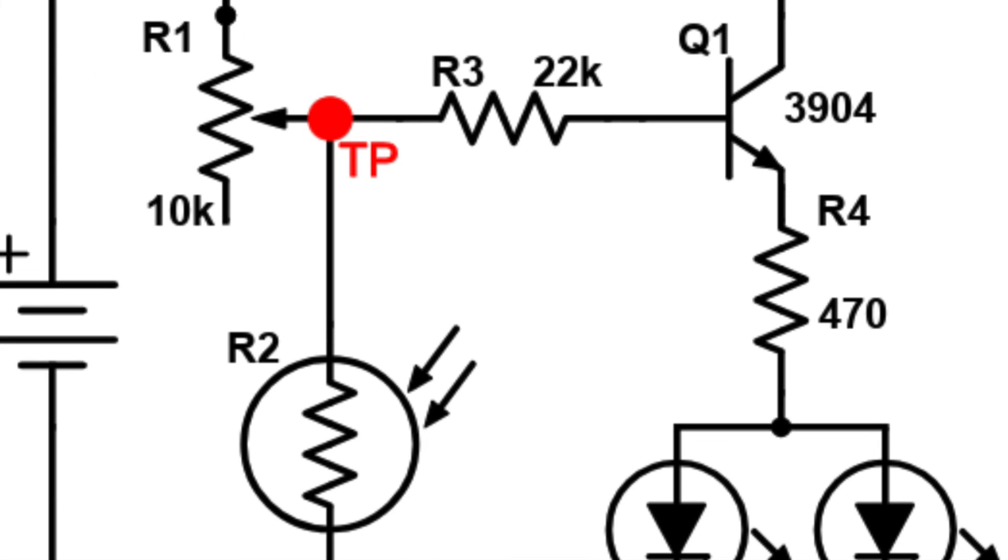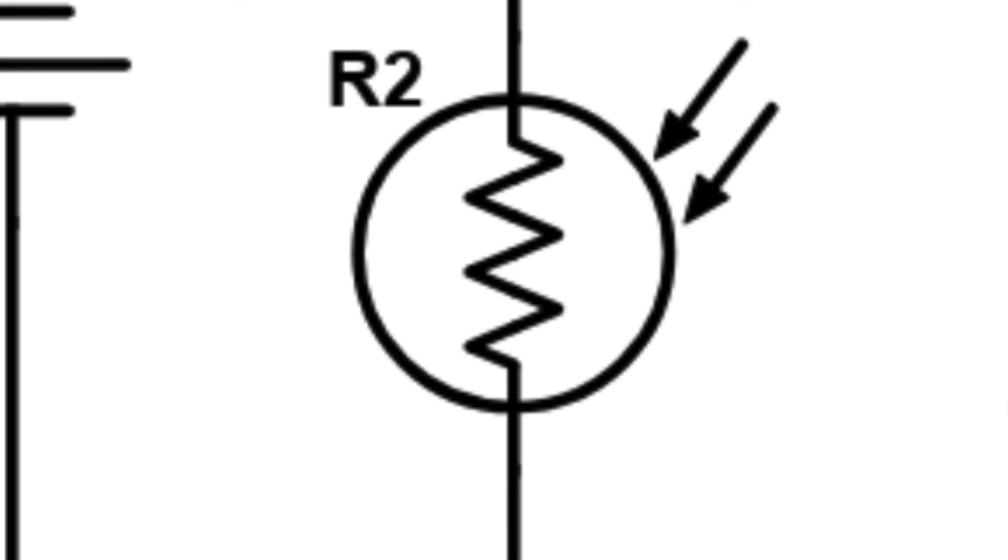Otherwise, if the resistance of R3 is greater than the resistance of R2, the current's path of least resistance passes through the LEDs, leaving them off.